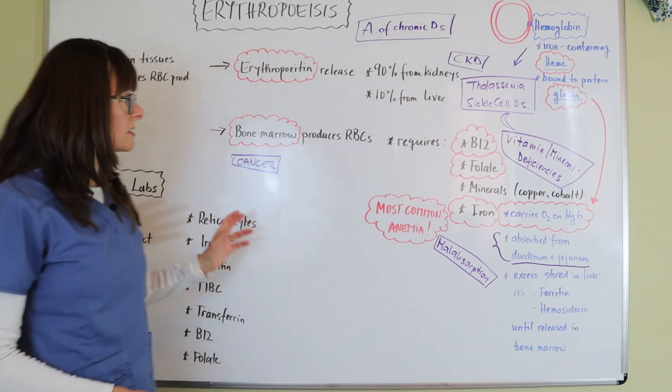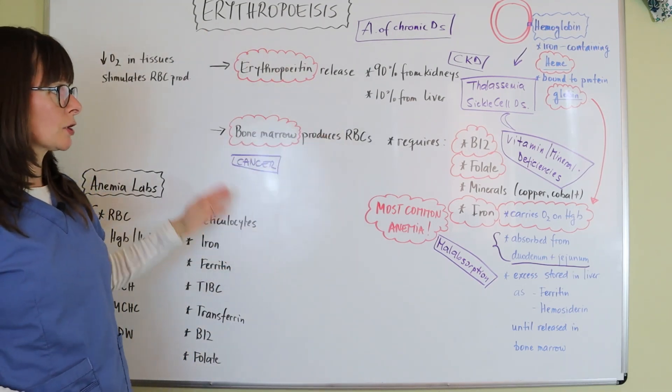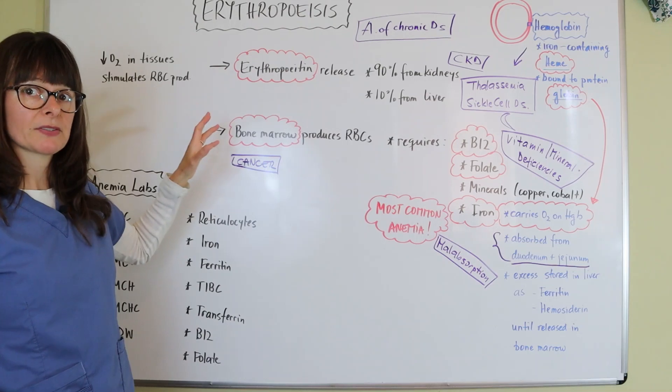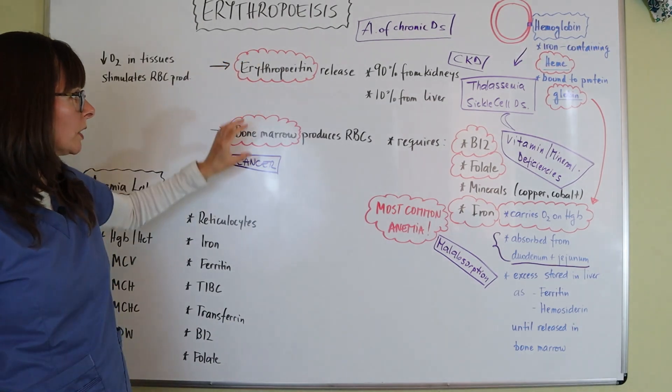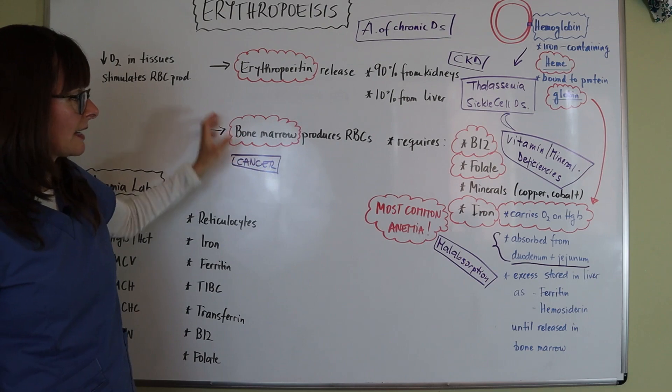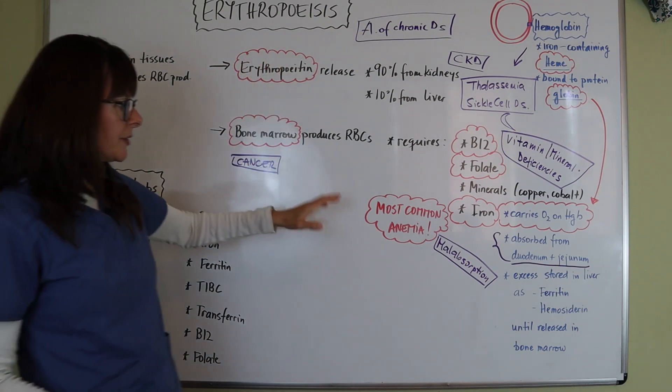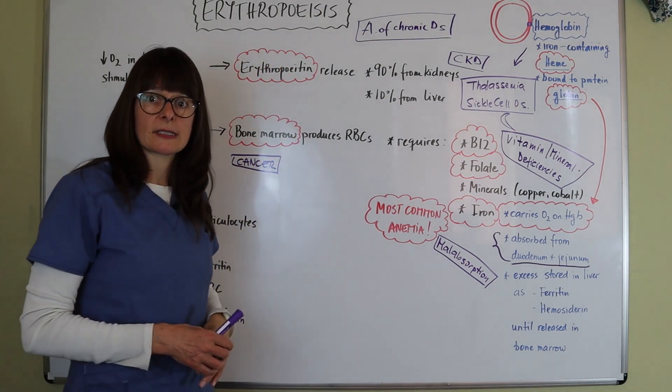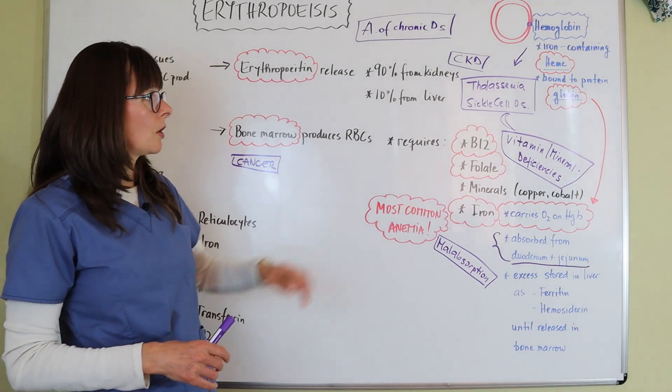So again, if you understand the cascade of events that it takes to produce the red blood cells, and then you know what area of this cascade things can break down, then you can kind of come up with the signs and symptoms.